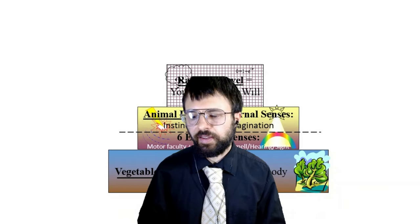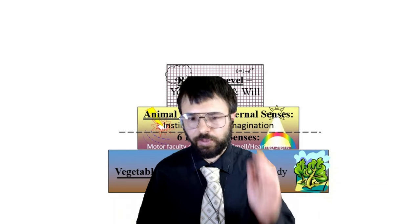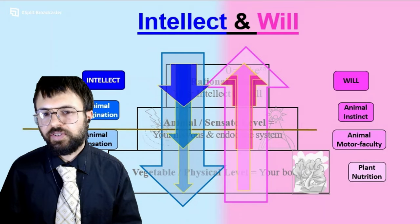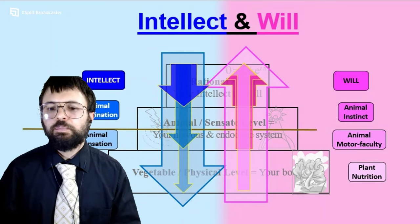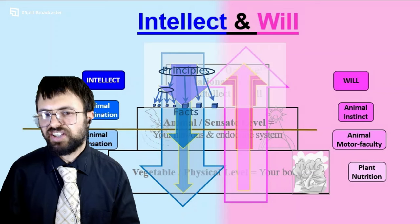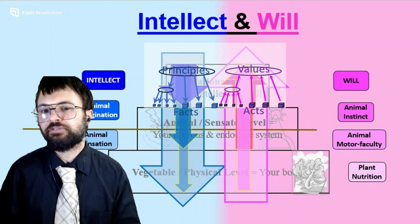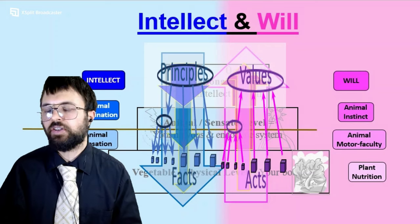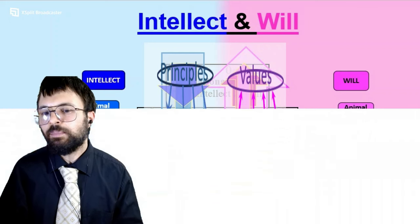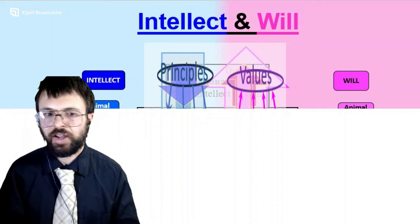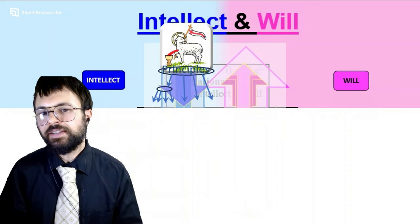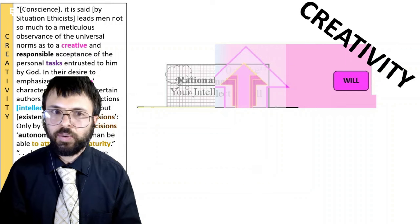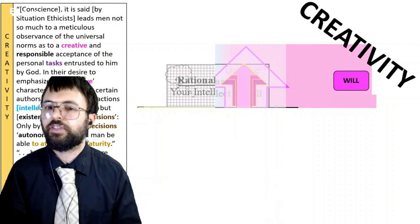Part number two of situation ethics is creativity. Back to the pyramid of human nature — we can distinguish intellectual from willful parts of the pyramid. Creativity is going to be in the top level of the pyramid where we have principles causing facts and acts revealing values. These actually transcend and get expressed out in the animal and physical levels of reality, but in themselves they really only exist at that top level. So we're going to focus on that, throwing out the other two levels, and also throw out the intellectual side because creativity really is only in the will.